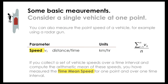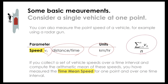We can also measure the point speeds of vehicles. Time mean speed (VT or UT) is measured as distance over time — in km/h or m/s — and is the arithmetic mean of every individual vehicle's instantaneous speed.